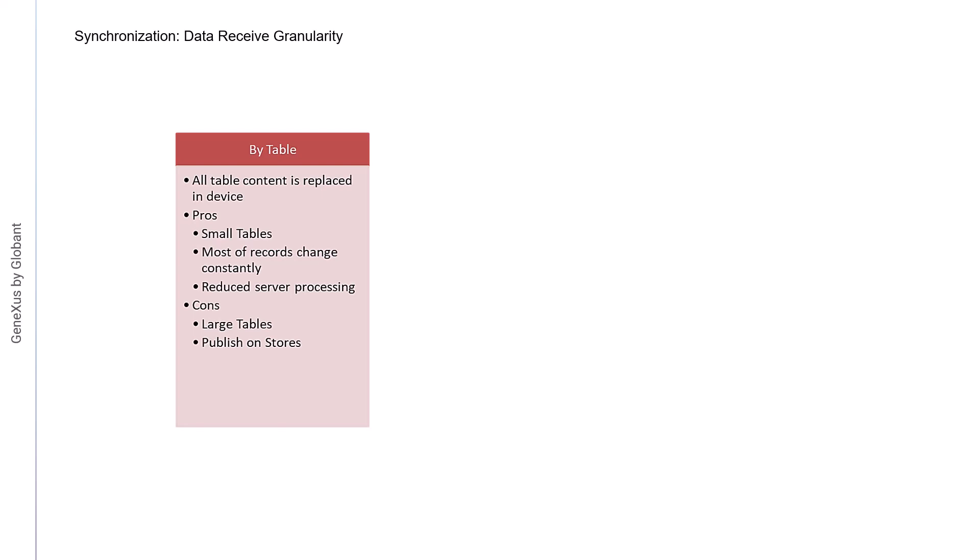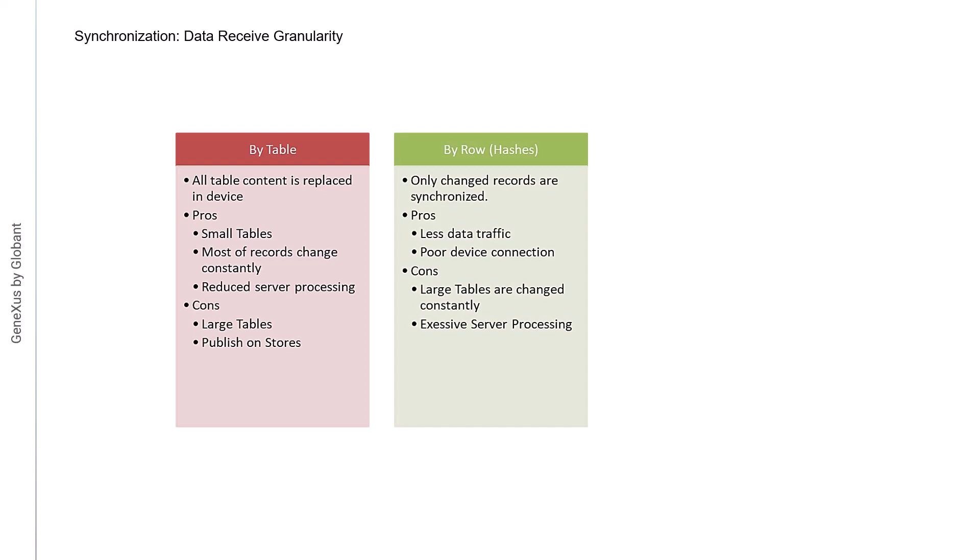That is to say, when it will be published in the store. For example, if all the data is sent in every synchronization, the user experience is not going to be very good. Synchronization by records is used to manage these cases. Here we have two options, to do it using hashes or timestamp. In the hash option, the server will determine which records must be sent to each device according to the hashes it will calculate for each data set and for each record. Then, only the new ones will be sent — only the records that have been modified. The advantage is that data traffic is considerably reduced, unless a large volume of data is frequently modified.